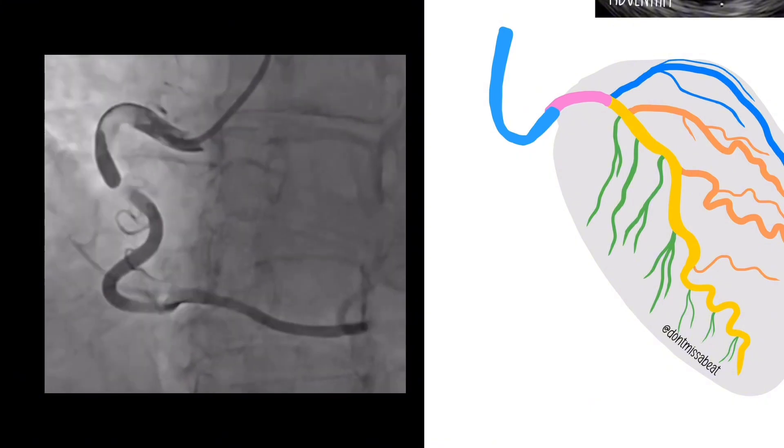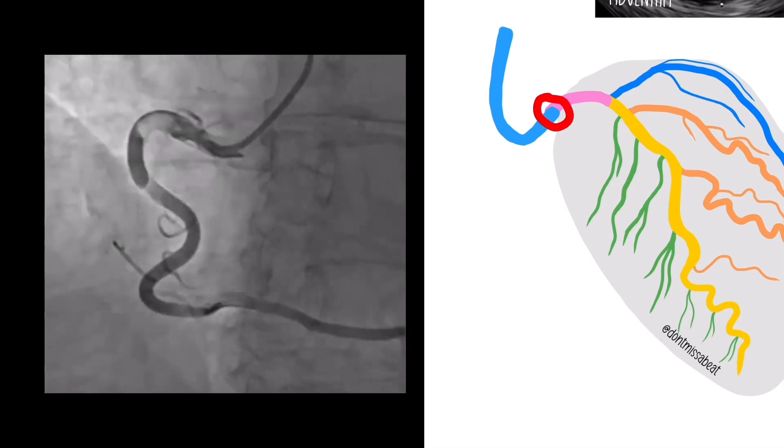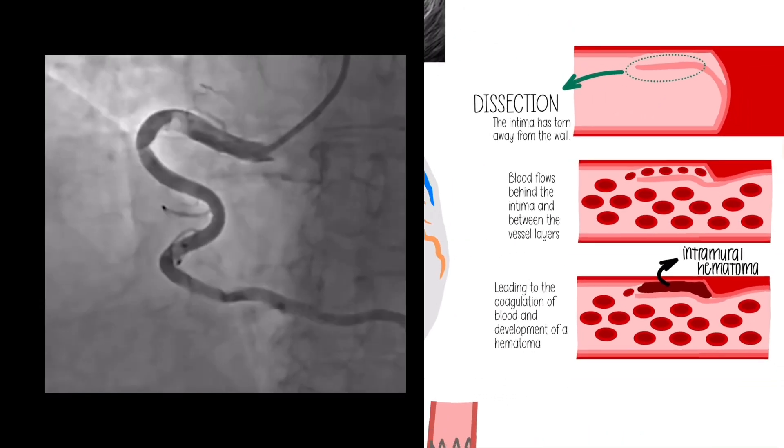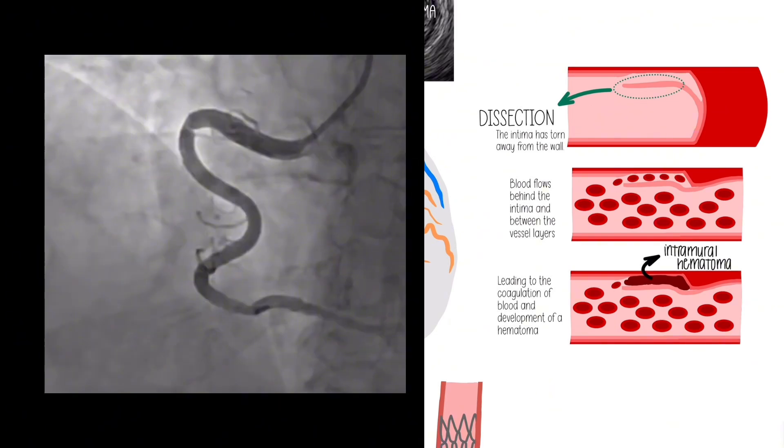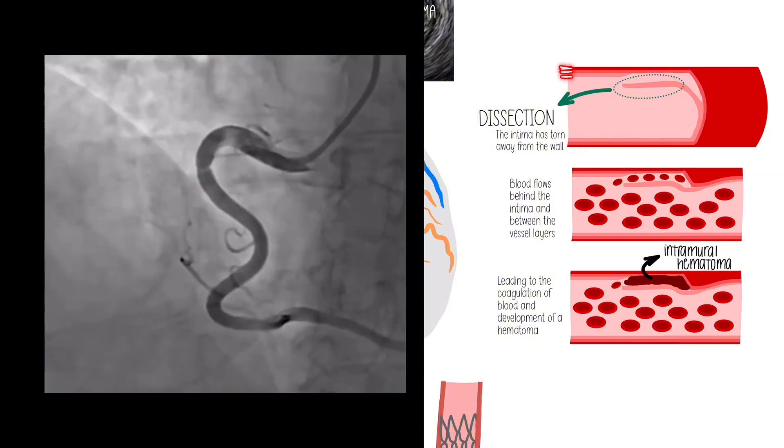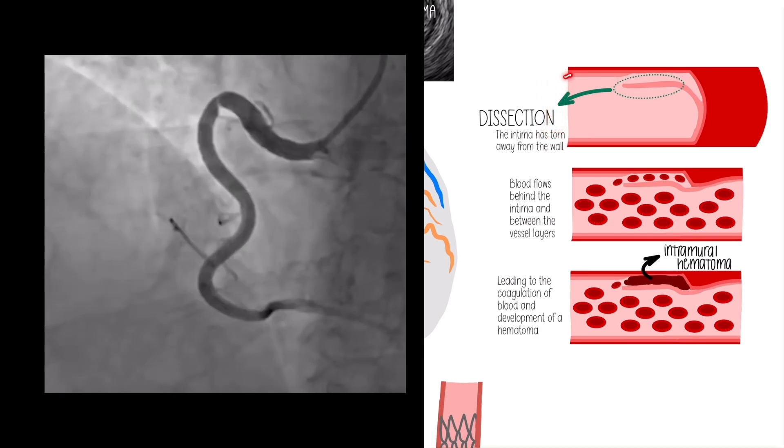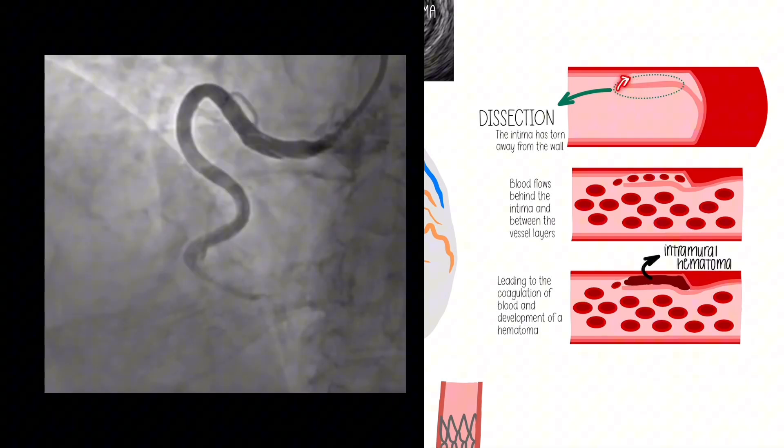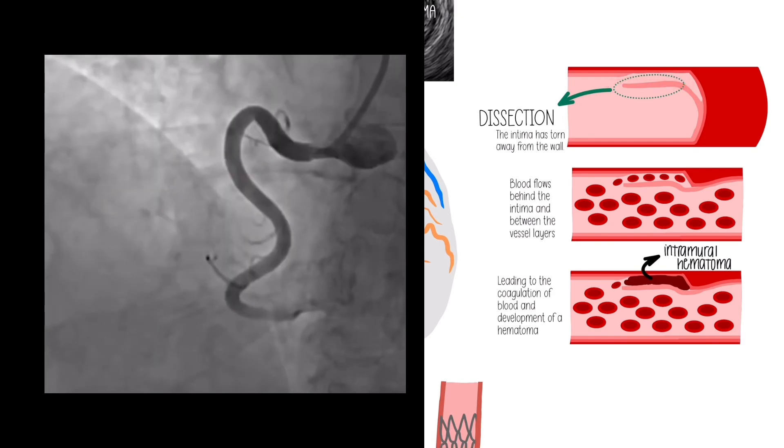Sometimes when we put this catheter up against the ostium—again rare but can happen and something you need to look out for—we can cause a dissection because there is this point of touching. What a dissection is, is a small tear in the vessel wall. Your vessel has three layers: the intima, the media, and the adventitia. When I put that catheter up against the wall, sometimes that shear pressure can cause this micro tear.